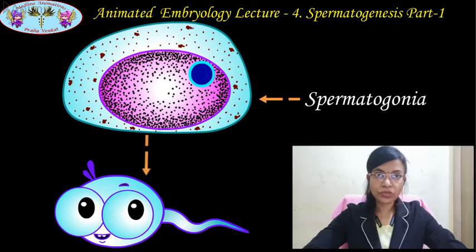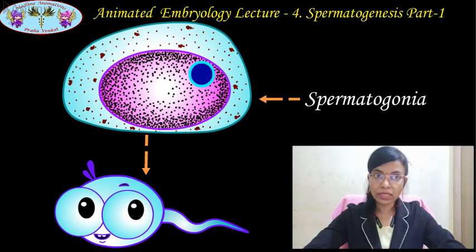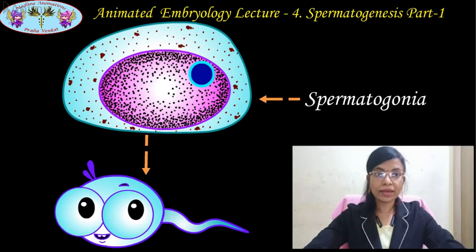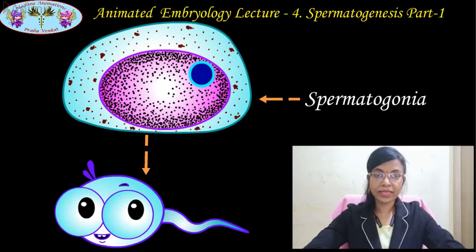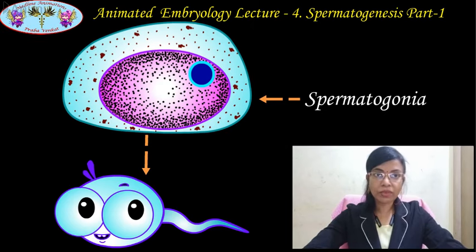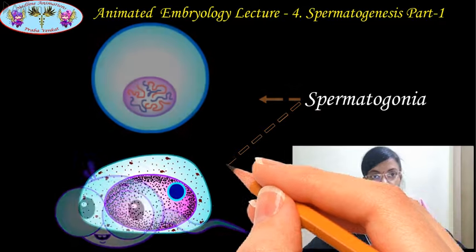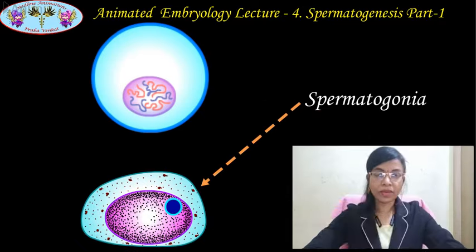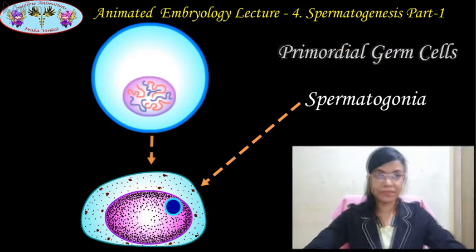Unlike oogenesis, spermatogenesis begins just before puberty and continues throughout the adult life with a decline in old age. Before seeing the actual process of spermatogenesis, let me briefly cover the formation of spermatogonia from the primordial germ cells.